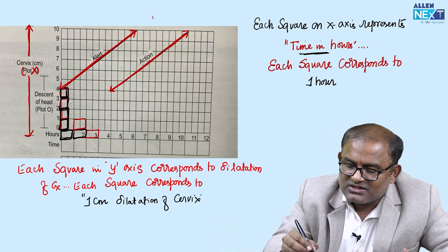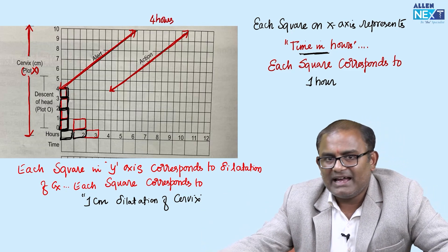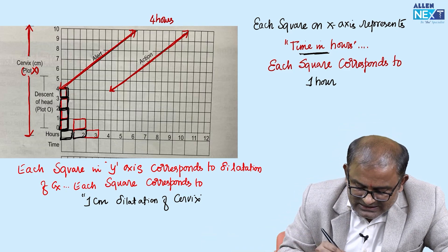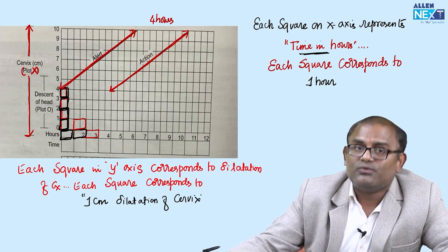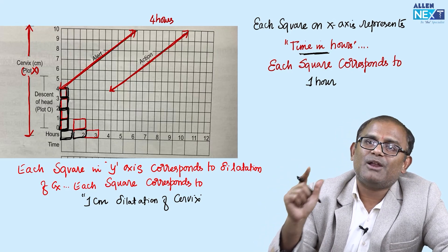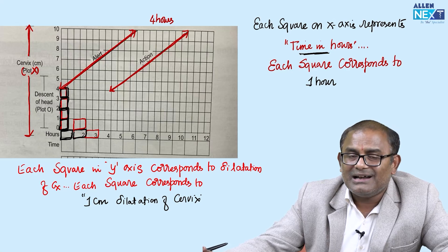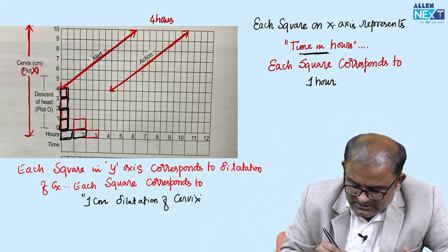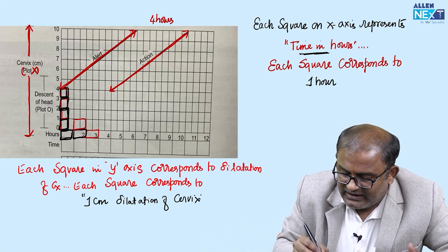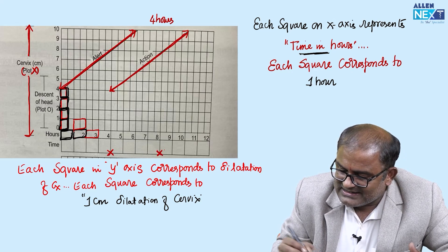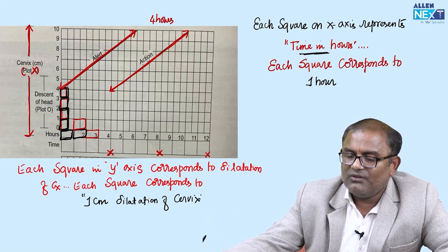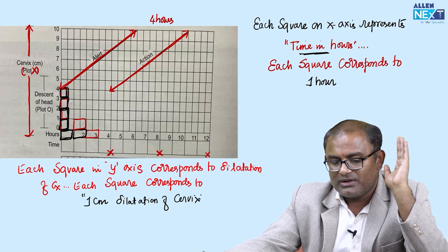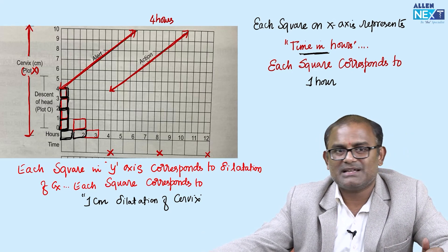The time gap between the alert line and the action line is 4 hours. The alert line is plotted based on the principle that in the active phase, minimum cervical dilatation will be 1 centimeter per hour. That is the principle of plotting the alert line — in the active phase, minimum dilatation is 1 centimeter per hour.